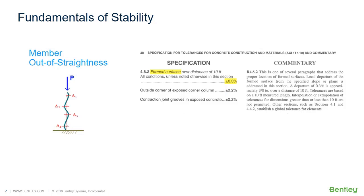Member out of straightness. The ACI 117 specification for tolerances for concrete construction and materials allows a variation in straightness of 0.3%. The axial loads acting on this curved member induce additional design forces into the member.